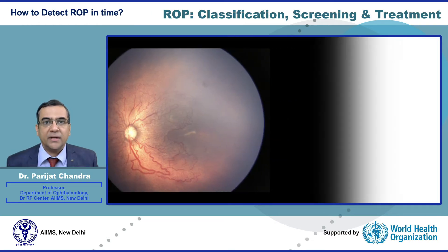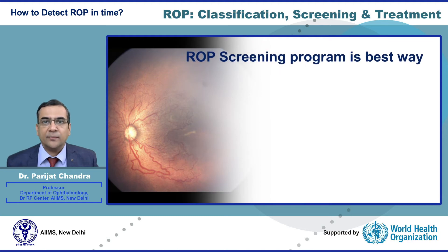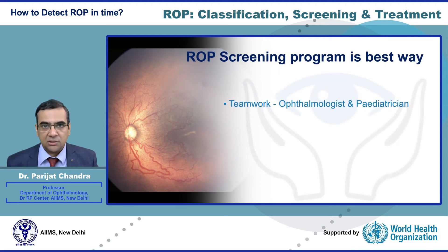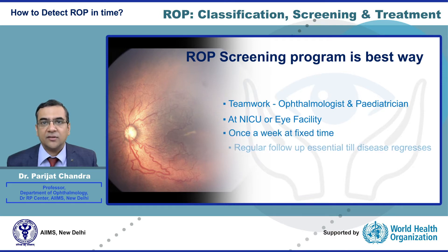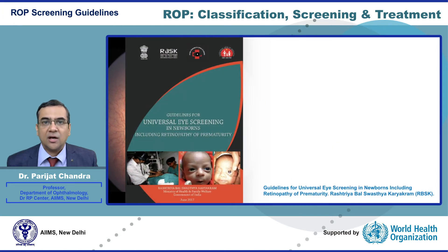To detect ROP in time, a ROP screening program is the best approach. It requires teamwork between the ophthalmologist and the pediatrician. Screening can be done in the NICU, SNCU, or eye facility once a week at a fixed time. Regular follow-up is essential until the disease regresses or progresses to a treatable stage. We follow the national ROP guidelines released by the Rashtriya Bal Suraksha Karyakram, or RBSK.